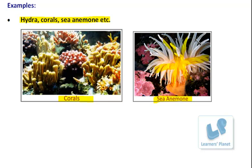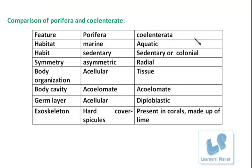These two groups are the lowermost groups — they are known as the lower animals. I have picked some basic features to compare these two groups. The very first feature is habitat. Both Porifera and Coelenterata are aquatic. For Porifera, it is required to mention that these are marine — they live in saline water. Whereas Coelenterata is also aquatic but is found in marine water as well as in fresh water.